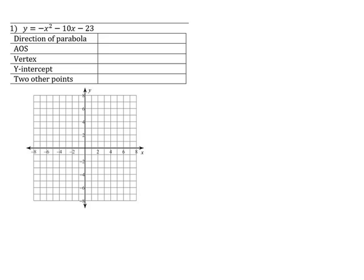So let's look at the standard form. So we have y equals negative x squared minus 10x minus 23. Now I can identify a as negative 1, b as negative 10, c as negative 23.